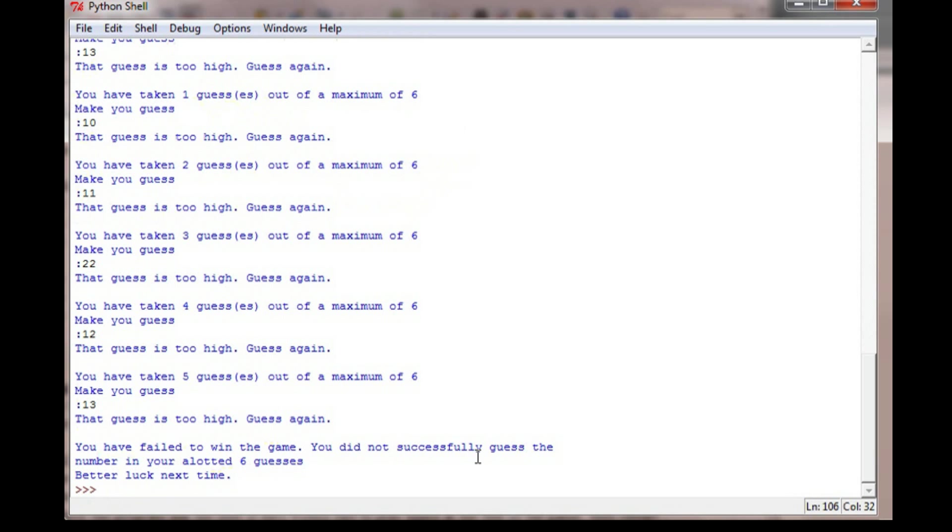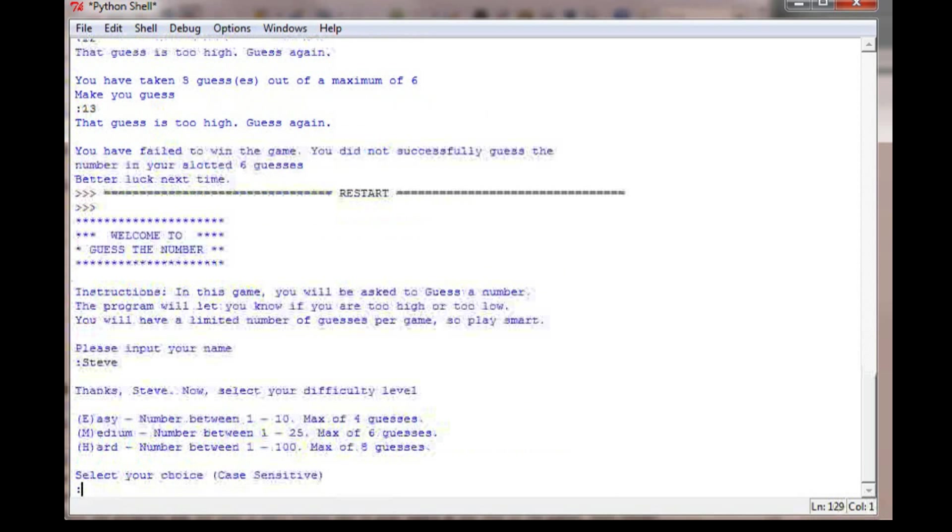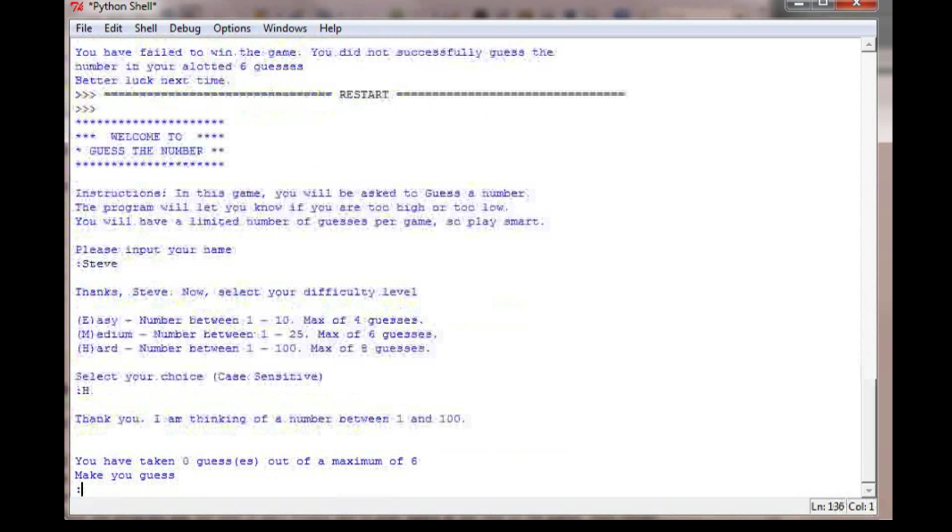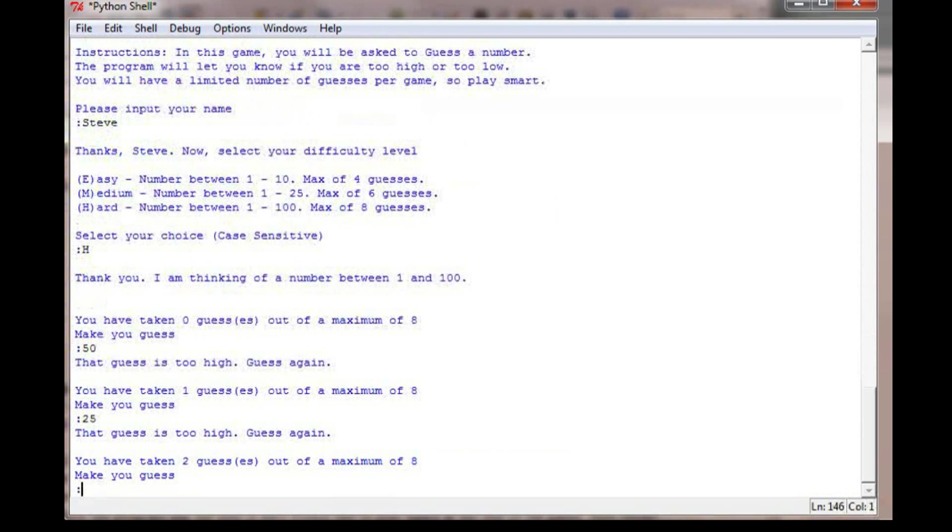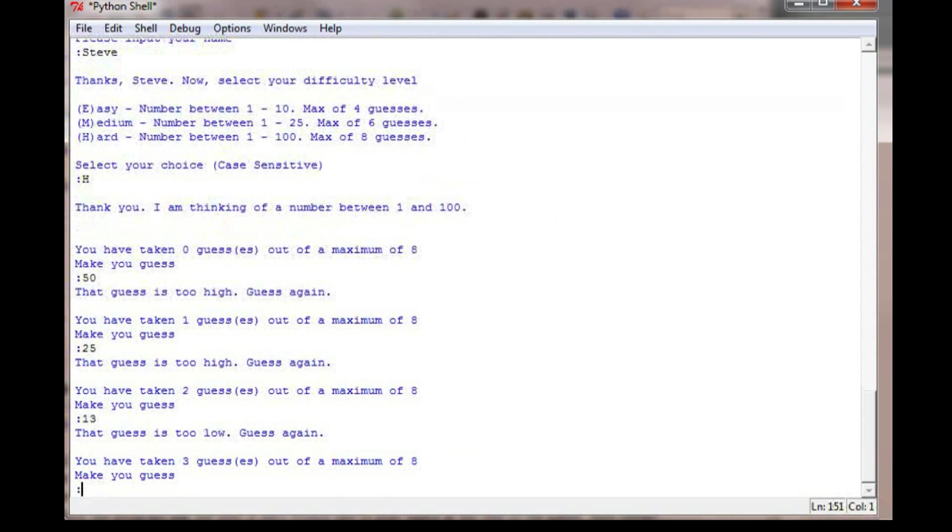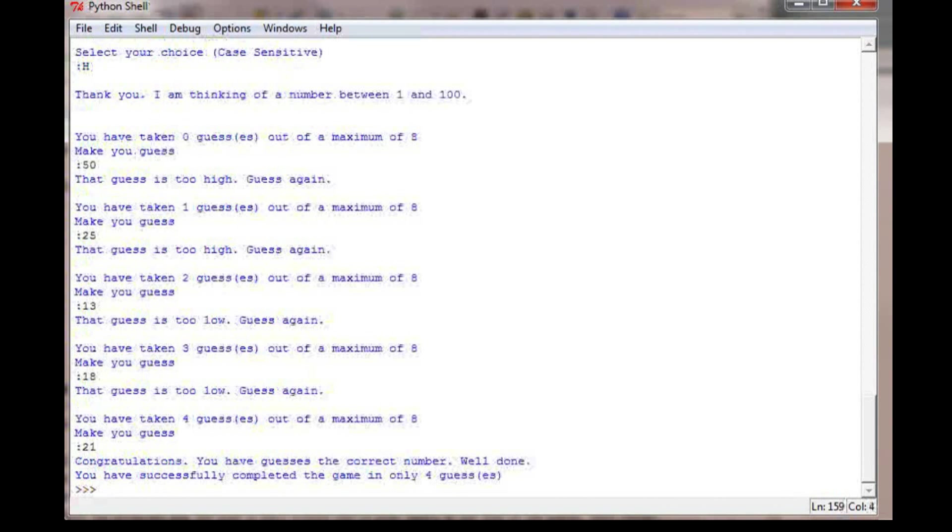I'm going to run this one more time on the hard difficulty to give that a test. My name is Steve. We're going on hard, thinking of a number between 1 and 100 with 8 guesses. Let's see, 50 is too high. Let's guess 25. That's too high. 13. That is too low. So it's between 13 and 25. Let's go with 18. 18 is too low. Let's go with 21. Congratulations, you have guessed the correct number in only 4 guesses.